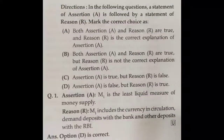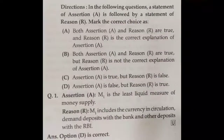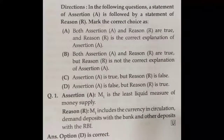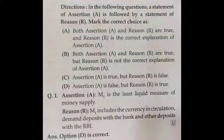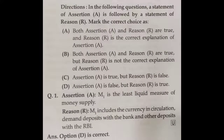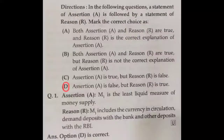Assertion-reason question number one. Assertion A: M1 is the least liquid measure of money supply — that is actually false. Reason R: M1 includes currency in circulation, demand deposits with the bank, and other deposits with the RBI — that is true. So assertion is false and reason is true — option D is the correct answer.